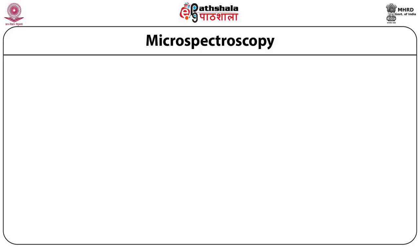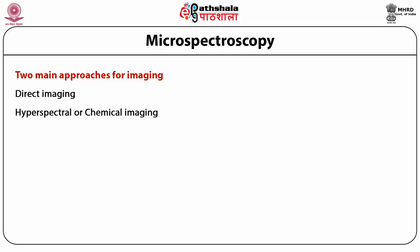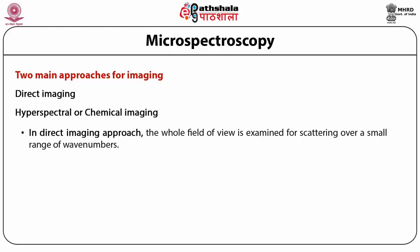There are two main approaches used for imaging with Raman spectroscopy. The first is direct imaging and the second is hyperspectral or chemical imaging. In the direct imaging approach, the whole field of view is examined for scattering over a small range of wavenumbers. For example, a wavenumber characteristic of cholesterol could be used to record the distribution of cholesterol within a cell culture — an extremely sensitive experiment that would be very difficult with other techniques.